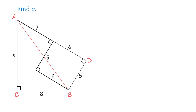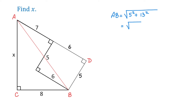In this triangle, BD is 5 units and AD is 7 plus 6, which is 13 units. So now we can use the Pythagorean theorem to find the hypotenuse AB. AB equals the square root of 5 squared plus 13 squared, and this is equal to the square root of 194.